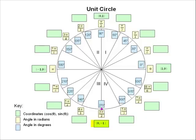At 270 degrees, we have x equals 0, and y equals negative 1. So we have the point 0 comma negative 1.